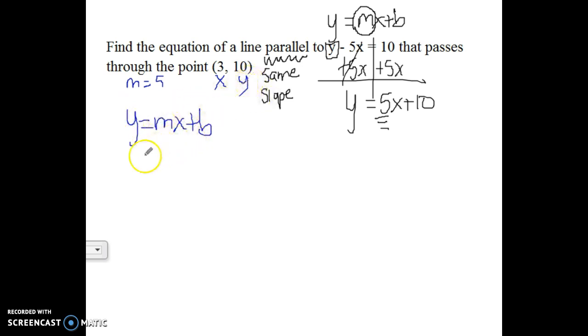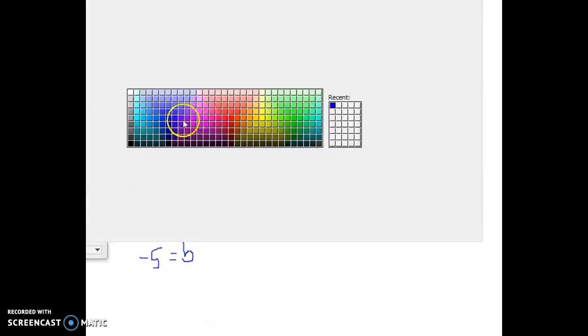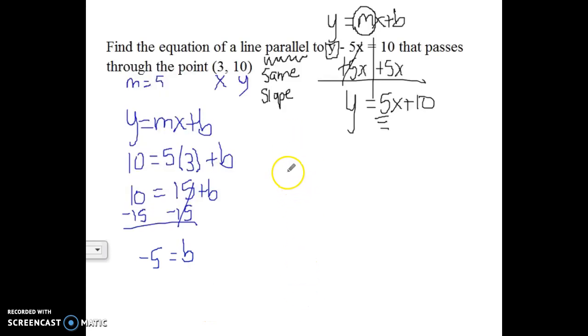I know the y is 10. I know the m is 5. I know the x is 3. And I don't know b yet, so that's what I'm going to solve for. So 5 times 3 is 15. And then if I want to get b by itself, I could subtract that from each side.